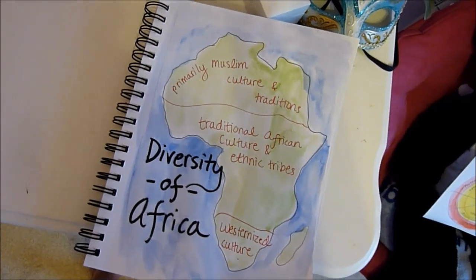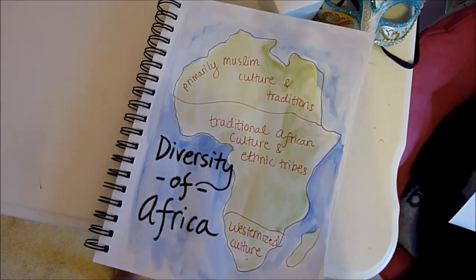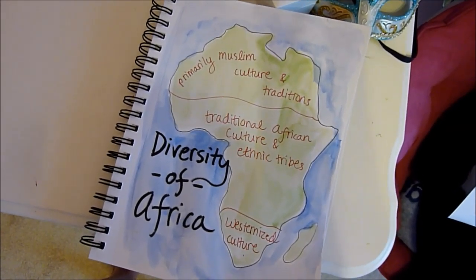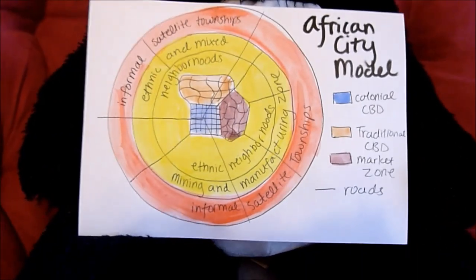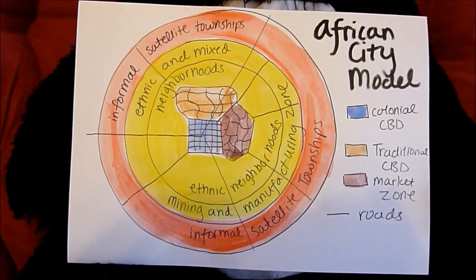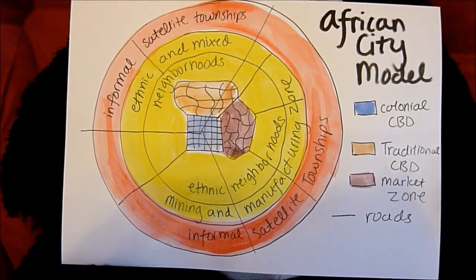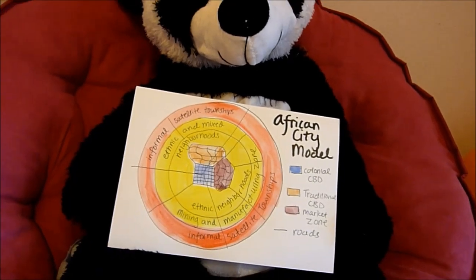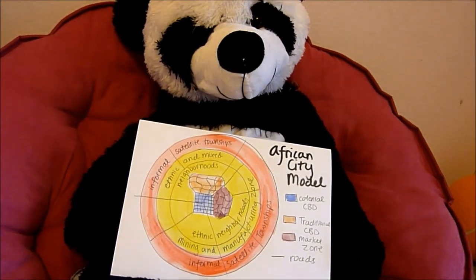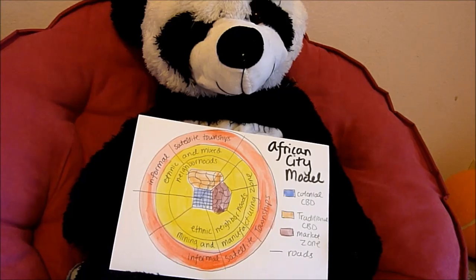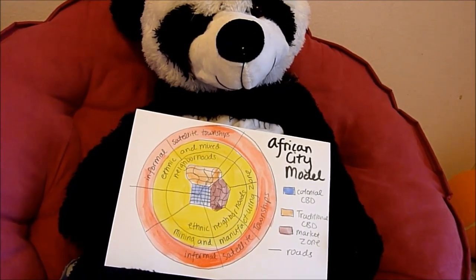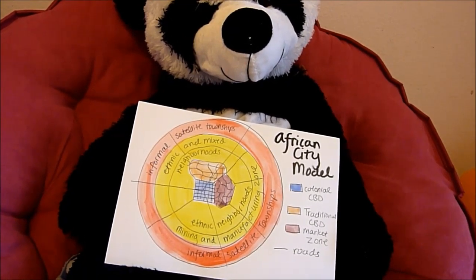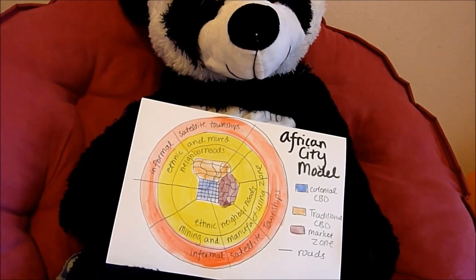In Africa, due to the heterogeneous culture of the continent, it is hard to compose one model for all African cities. However, since many African cities were colonized by European superpowers, they tend to have a colonial CBD alongside their traditional CBD, with a market area beside it that serves as a commercial core. The residences surround the city in concentric rings, usually of mixed socioeconomic class. Still, many variations of this model exist due to the differences of cultures in different regions of Africa.